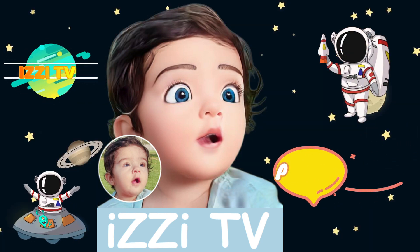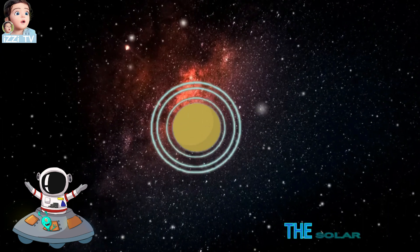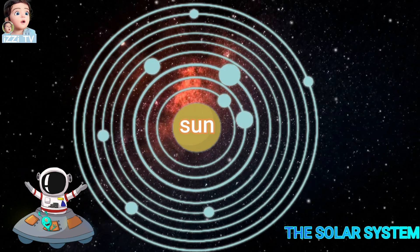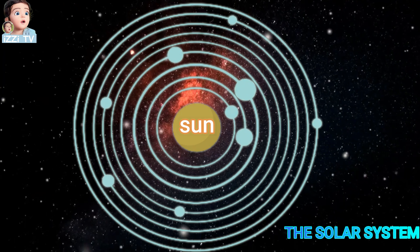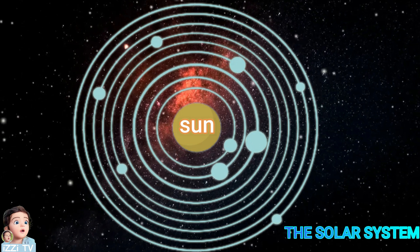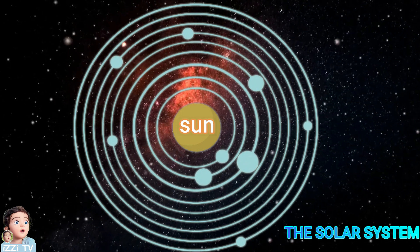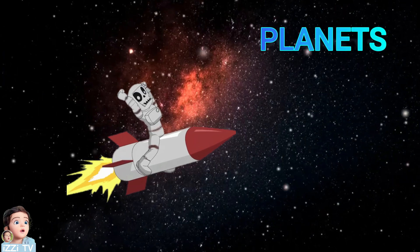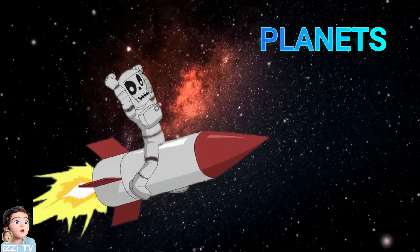Planets! This is our solar system, and we are taking a tour around it. Right at the center is the sun. It's much bigger than the planets that spin around it. Now we are going to jump into our spaceship and see all the planets in the solar system. Come with me!